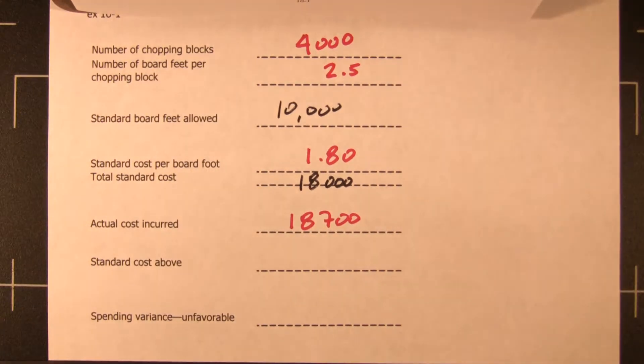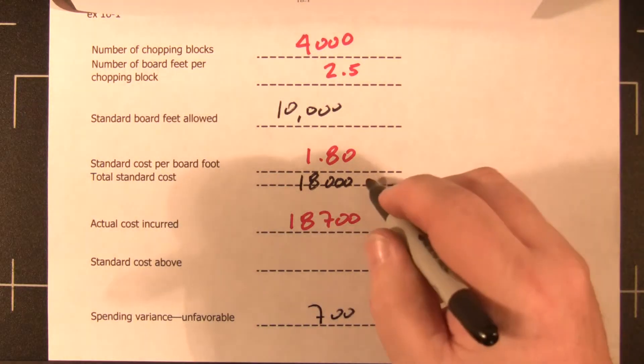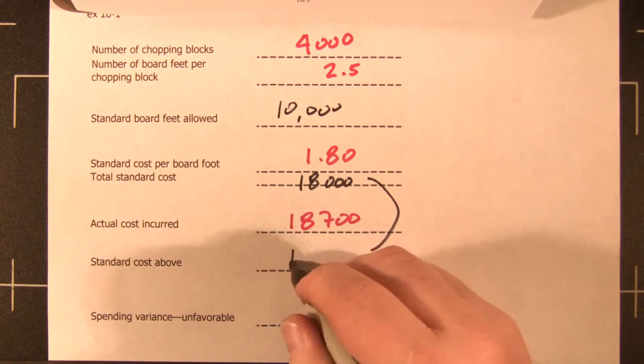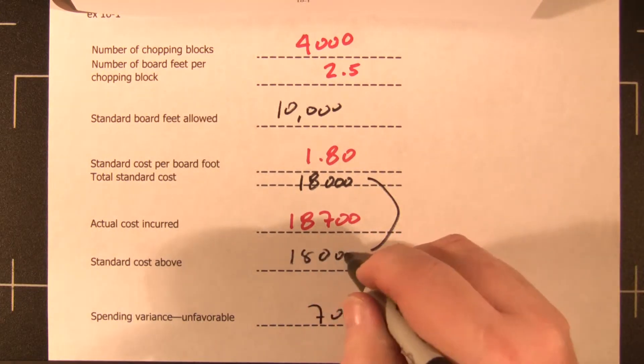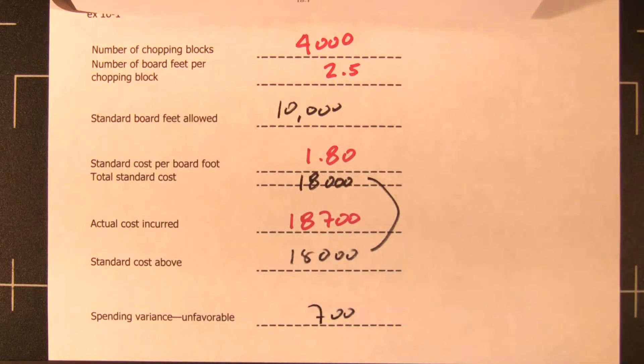So we know that we had both a material and a price variance, but we don't know where that all comes from. So we have to come up with an explanation for that $700 unfavorable spending variance for material.